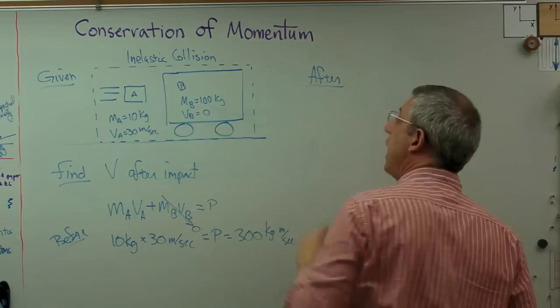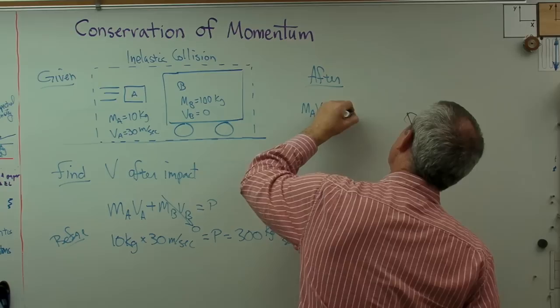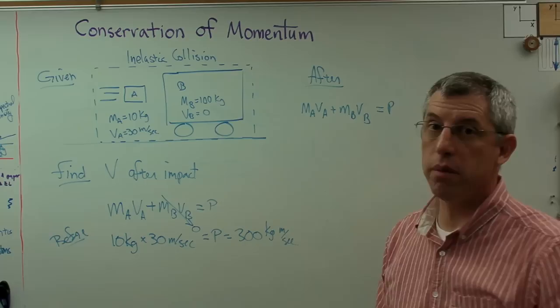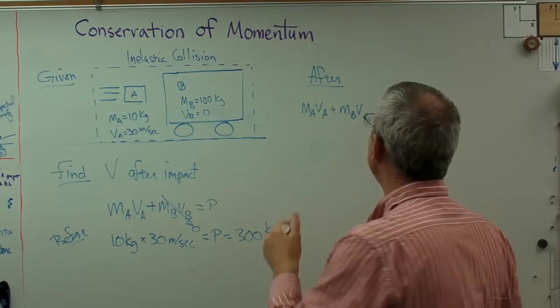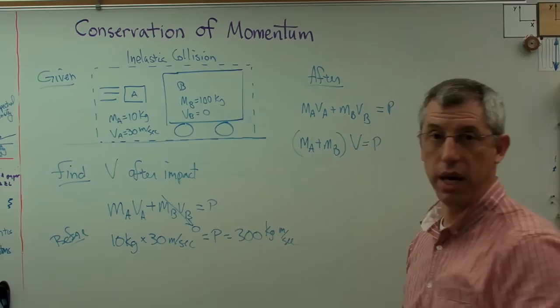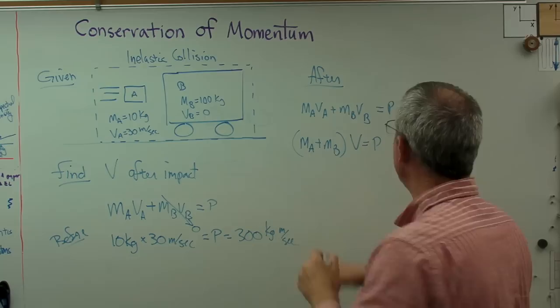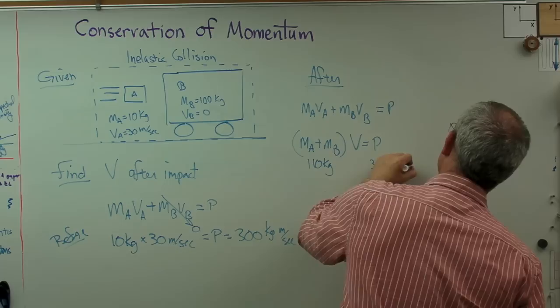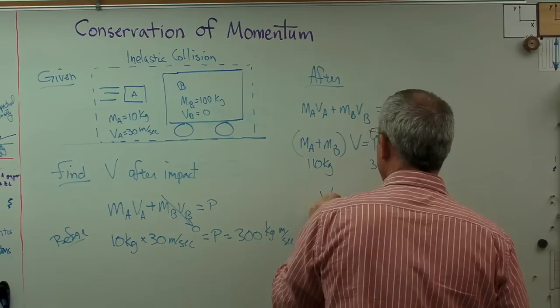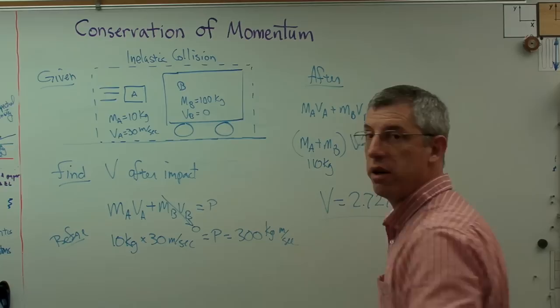After impact, both of them are moving, so I'm going to write the exact same thing: MA VA plus MB VB still equals P. Hasn't changed, momentum's conserved. Now the velocities are the same because they stuck together and kept moving. So I'm going to make a very small change to this. If P equals 300 kilogram meters per second, and that's going to equal 110 kilograms now, V equals 2.7273 meters per second. There's the final velocity.